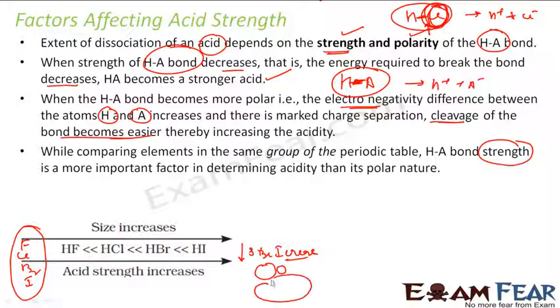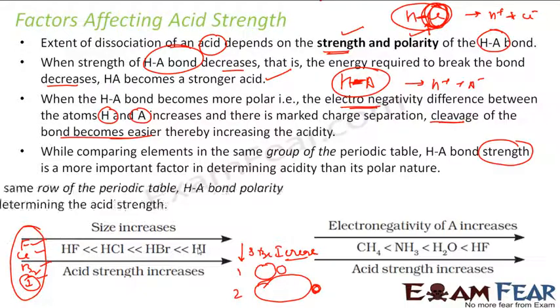For example, if the size is increasing, this atom will not be able to hold the hydrogen atom properly because the size increases, so the bond becomes weaker. So if you see HF, HCl, HBr, and HI, HI is the strongest acid because the bond strength is least.